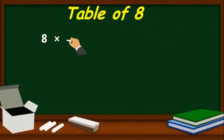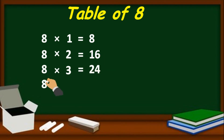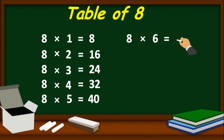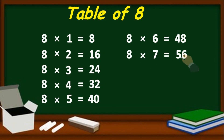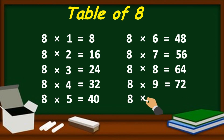Table of 8. 8 one's are 8, 8 two's are 16, 8 three's are 24, 8 four's are 32, 8 five's are 40, 8 six's are 48, 8 seven's are 56, 8 eight's are 64, 8 nine's are 72, 8 ten's are 80.